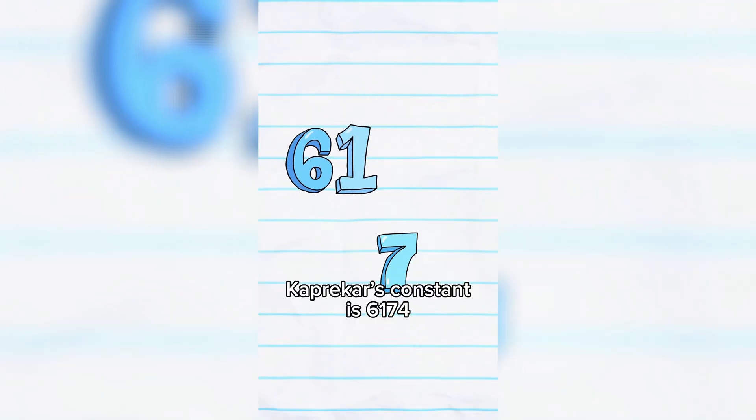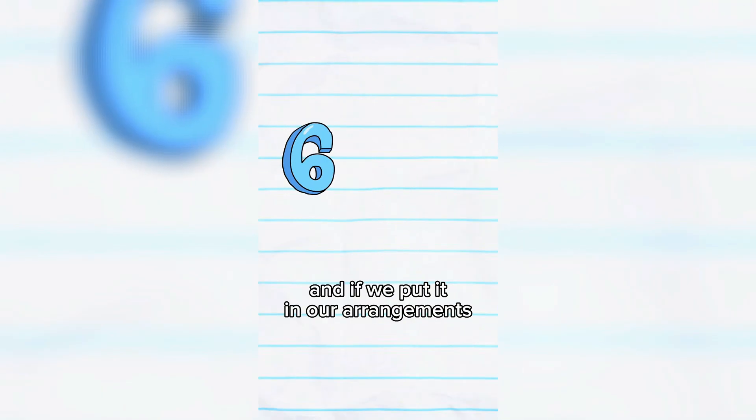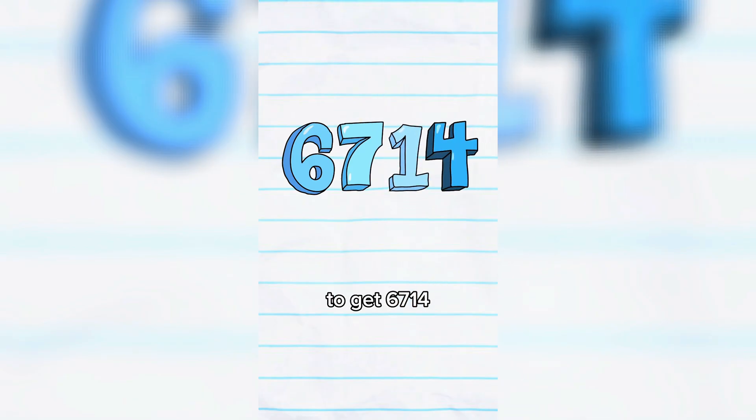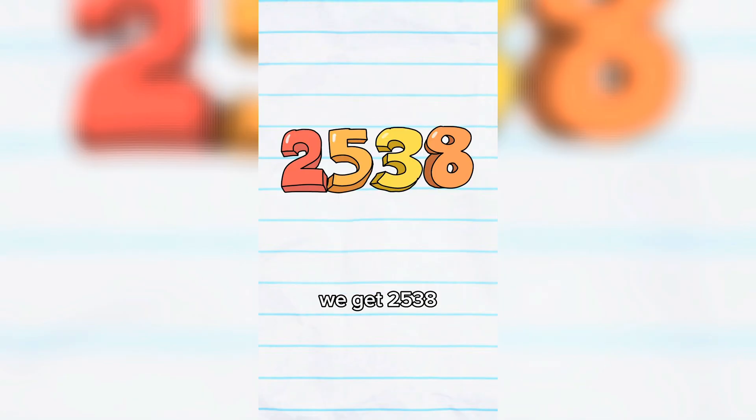Kaprekar's constant is 6,174, and if we put it in our arrangements to get 6,714 to subtract it from its reverse, we get 2,538.